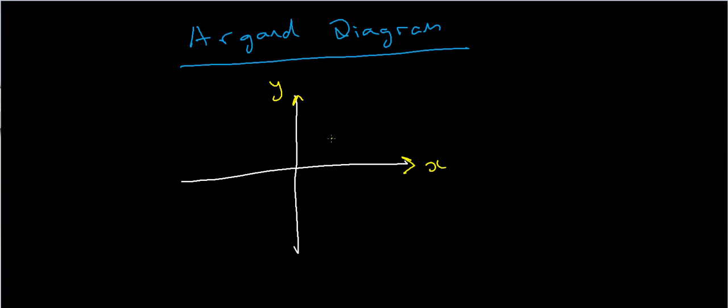So this is called an argand diagram, also called the complex plane. By the way, even though this is called an argand diagram, Argand did not invent it. The first man to actually describe or give a geometric interpretation of complex numbers in a complex plane was actually a Danish-Norwegian mathematician called Kasper Vessel, so really we should be calling this a Vessel diagram, but the rest of the world calls it the argand diagram. So I'll stick to that for now.